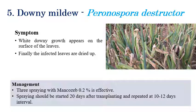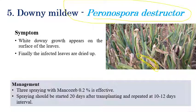The next disease is Downy Mildew, caused by Peronospora destructor. As the name indicates, a white color downy growth can be seen on the surface of leaves — this is why the leaves hang down. Rotting or dying symptoms can be seen. The infected leaves are finally dried up as water content is reduced. These are the major symptoms of Downy Mildew.